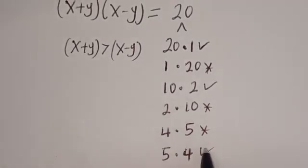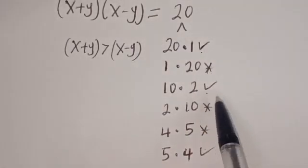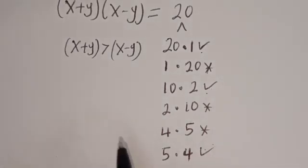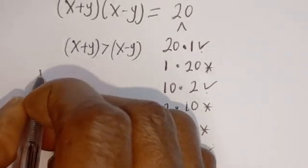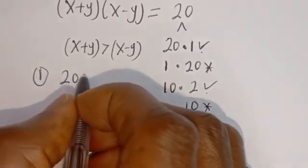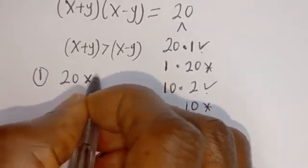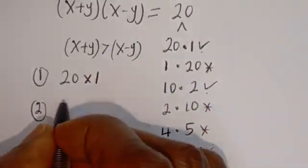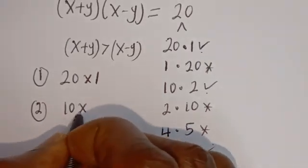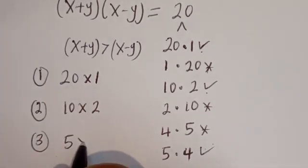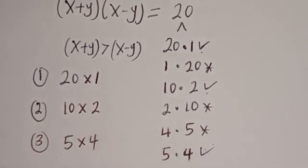So we have three cases. First case: 20 multiplied by 1. Second case: 10 multiplied by 2. Third case: 5 multiplied by 4.